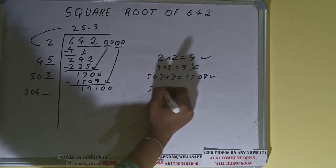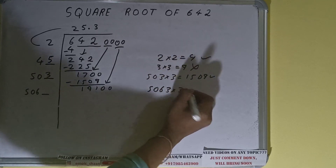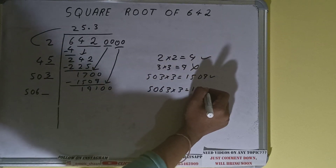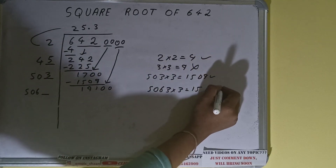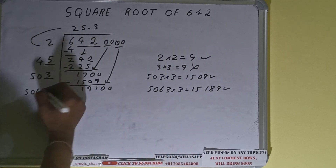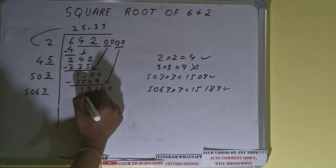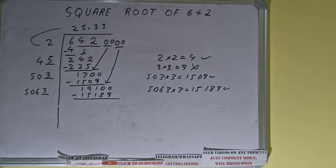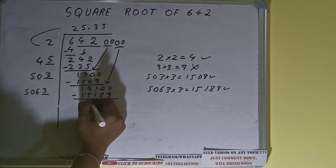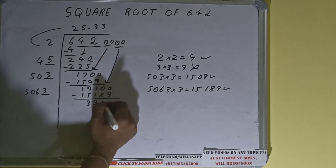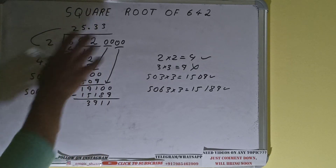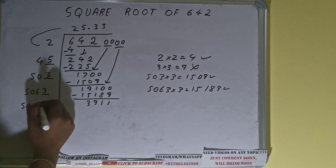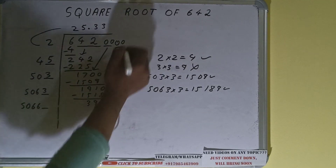5063 into 3 we can try — it will be 15,189. That is good to take, so 3 here and 3 here. Subtract 15,189 and 3911 will be left. We did 5063 into 3. To add both: 5063 plus 3 will be 5066.